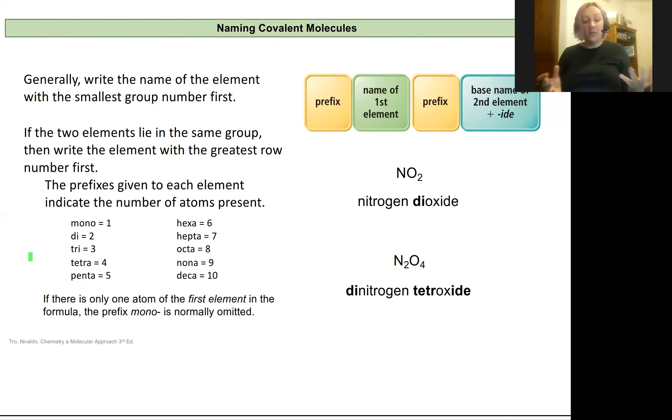In general, the way that we handle writing covalent molecules is we write the first name of the element with the smallest group number first. We're going to walk through an example with some nitrogen and oxygen. Nitrogen is in the fifth group and oxygen is in the sixth, so nitrogen would be written first. Smallest group, write that one first, since we don't have the cation anion rule to follow.